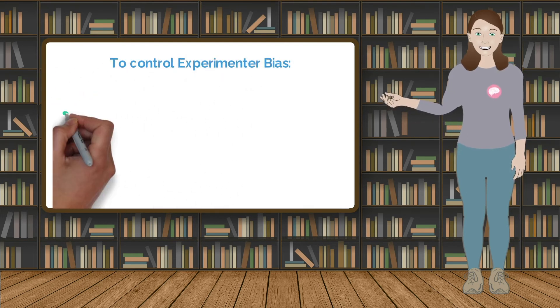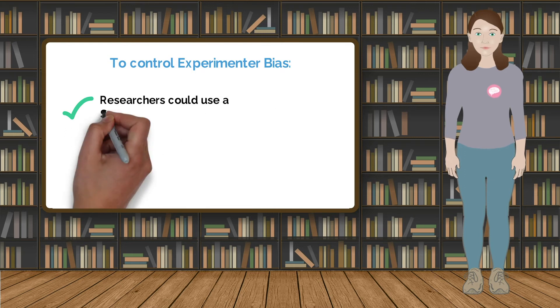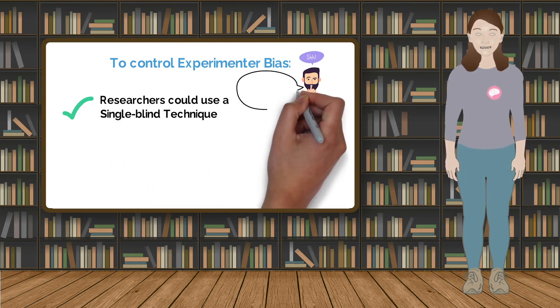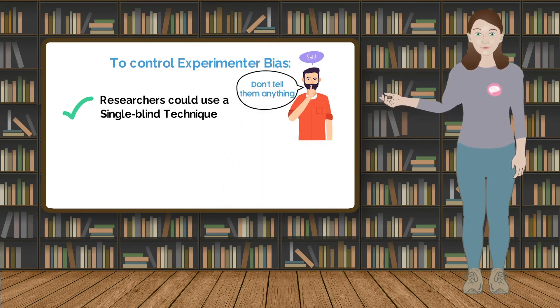To control for these in a study, researchers could use a single blind technique where participants are not told the aim of the study to prevent them from altering their behaviour in relation to this.